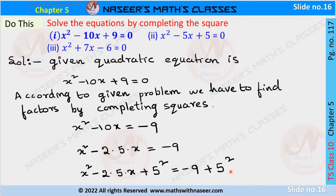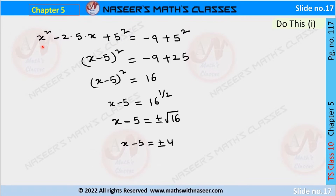Then it can be written as x² - 2·5·x + 5² = -9 + 5². On the LHS this is in the form of x² - 2ab + b², so it can be written as (x - 5)². On the RHS, -9 + 25 gives us +16.